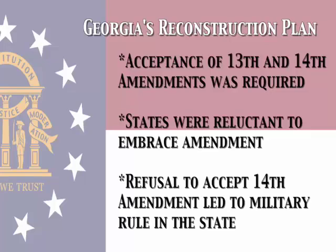The refusal of the 14th Amendment was widespread in the South, except for the state of Tennessee. This led to the first Reconstruction Act, which implemented martial law in the state of Georgia. One of the roles of the military was to register former slaves and eligible white voters to participate in a constitutional convention, which would ensure suffrage and equality for former slaves.